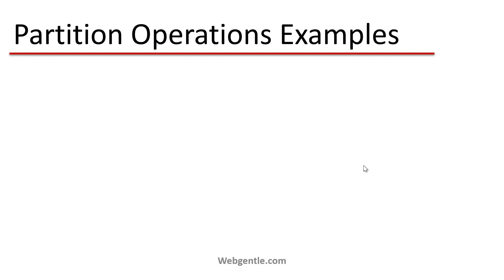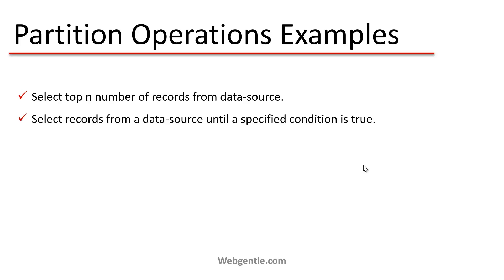To understand it better, let's look at some examples. First, selecting the top N number of records from a data source — suppose you have a data source and you need to select the first five records, then you can use partition operations. Second, selecting records from a data source until a specified condition is true — if you need to fetch records until a given condition is met, you can use partition operations for that scenario.